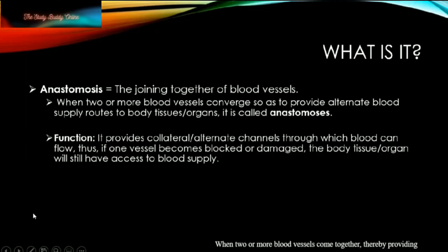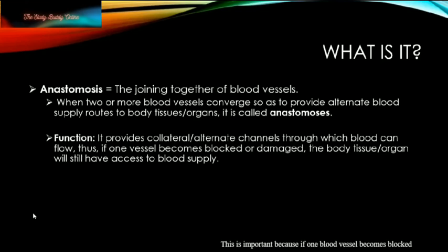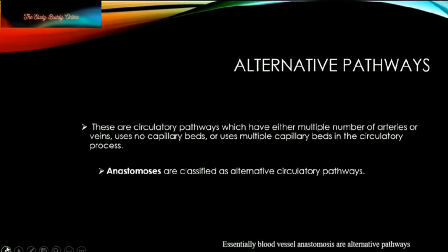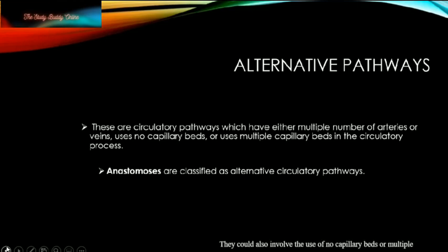When two or more blood vessels come together, thereby providing alternate routes of blood supply to the body organs or tissues, it is called anastomosis. This is important because if one blood vessel becomes blocked or damaged — for example due to atherosclerosis, which involves a build-up of cholesterol plaque in the walls of the arteries — then the other blood vessel can direct blood to or from the organ or tissue. Blood vessel anastomoses are alternative pathways through which blood reaches an organ or body tissue. These alternative circulatory pathways could involve multiple arteries, multiple veins, or multiple capillary beds.